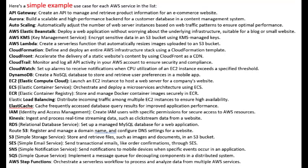Elastic Load Balancing: distribute incoming traffic among multiple EC2 instances to ensure high availability. ElastiCache: cache frequently accessed database query results for improved application performance.